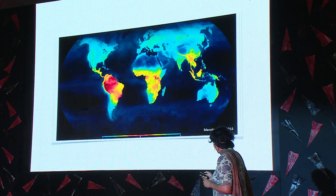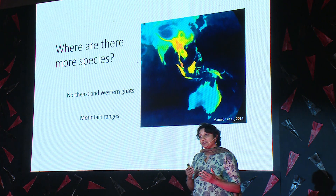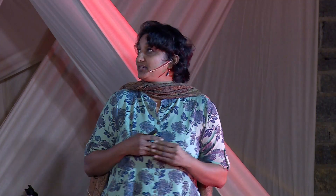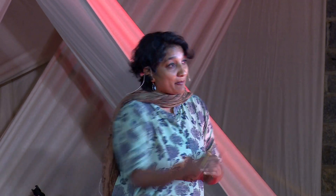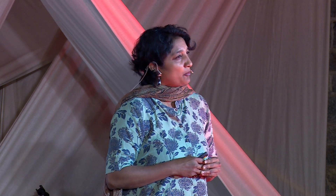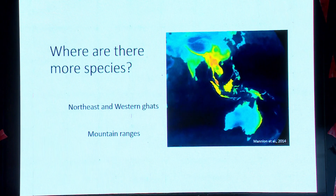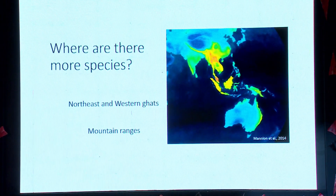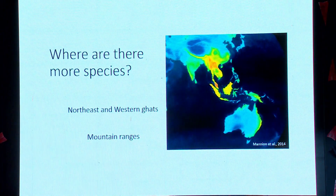If you look a little more closely at India, you'll see that biodiversity is high in the northeast, like a comet into the Himalayas, and also in the Western Ghats. What's common between these two areas? They're both mountain ranges. So is it really that there are more species in mountain ranges?